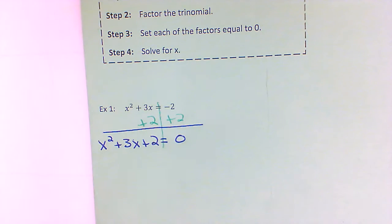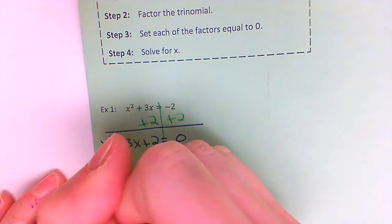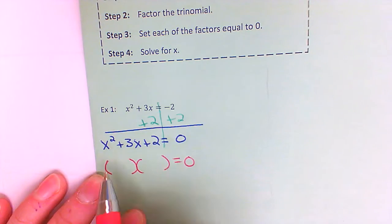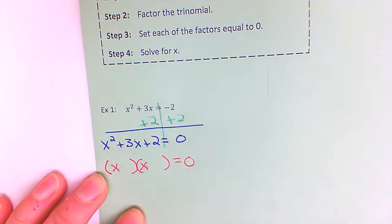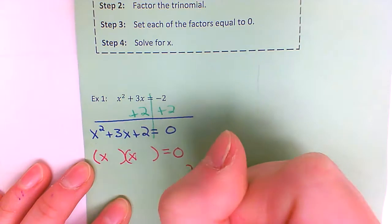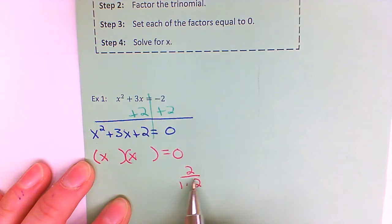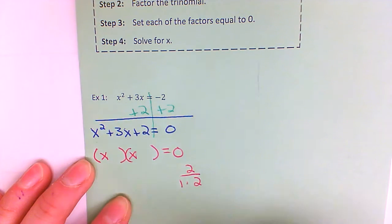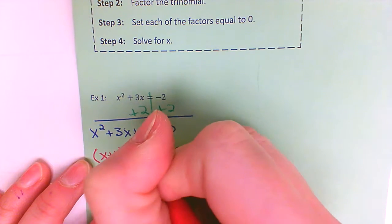Now that I've got that taken care of, it's the same thing as what we were doing yesterday. I don't have a number in front of my x squared, so I can go ahead and put my x in the front of each parentheses. I'm going to list the factors of two — one times two. Those two do add to give me three, the middle term. So I'm going to take a plus one and a plus two.